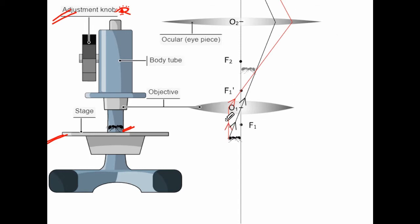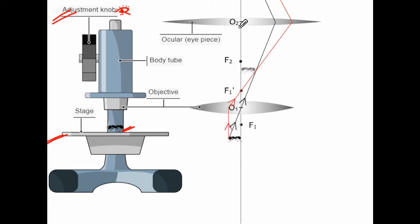In this ray diagram, we will study how exactly image formation takes place in the compound microscope. The ant is kept on the stage, nearer to the objective lens. Both lenses have their own focal length values. The objective lens focal length should be small, and the eyepiece focal length should be comparatively large.